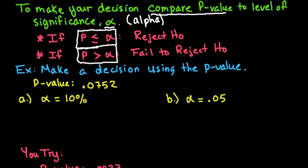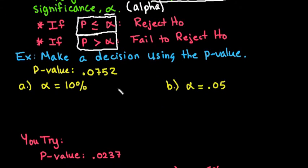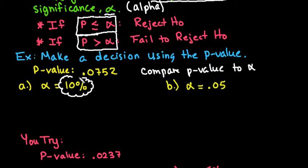The first one that I have is make a decision using the p-value. So the p-value that is given to me is 0.0752. Remember what we're going to do is we're going to compare our p-value to our given alpha level. For the first one it is given to us as a percent and we always want to convert our percent into decimals.